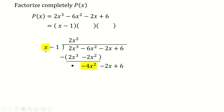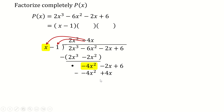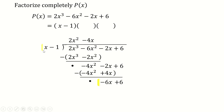For the next step: to get -4x², we multiply x by -4x. Then -4x times x = -4x² and -4x times -1 = +4x. Subtracting: -4x² cancels to 0, and -2x minus (+4x) = -6x. We bring down the +6, leaving -6x + 6.